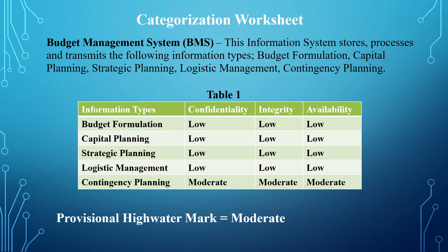The same applies to capital planning, strategic planning, and logistic management. For contingency planning, it was documented that the impact level to confidentiality is moderate, meaning there is going to be a serious, significant adverse effect to the information system should there be a security breach or unauthorized disclosure of contingency planning information to an unauthorized person.